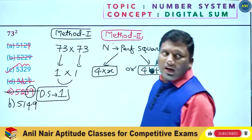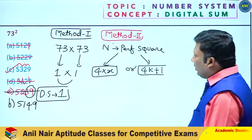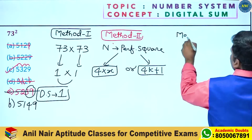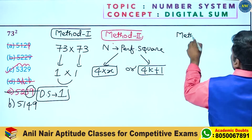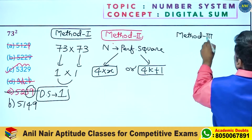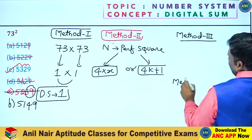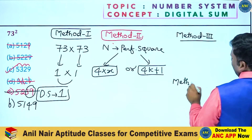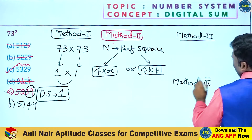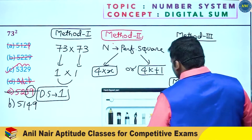Option 5149 — checking via Method 2. Method number 3 and Method number 4 — concept use. Method 3 and Method 4 introduced.